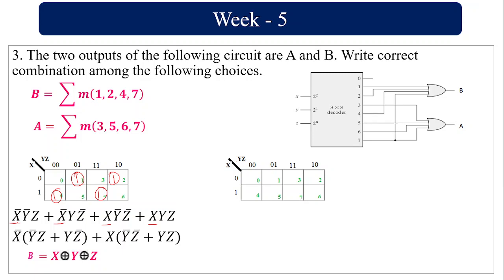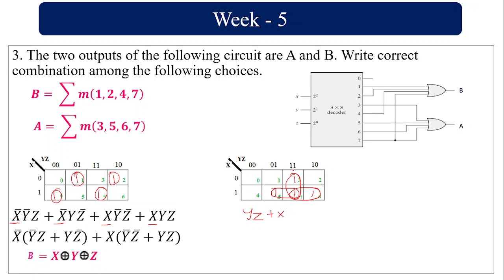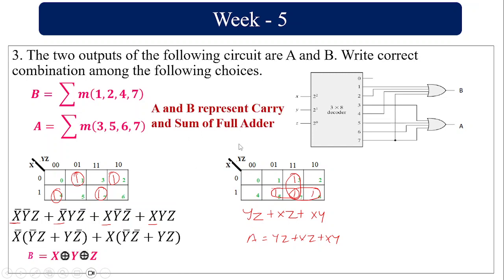Similarly for A with minterms 3, 5, 6, 7: I can form three pairs. The value is Y·Z + X·Z + X·Y. So A is the carry of a full adder and B is the sum of a full adder. So A and B represent the carry and sum of the full adder.